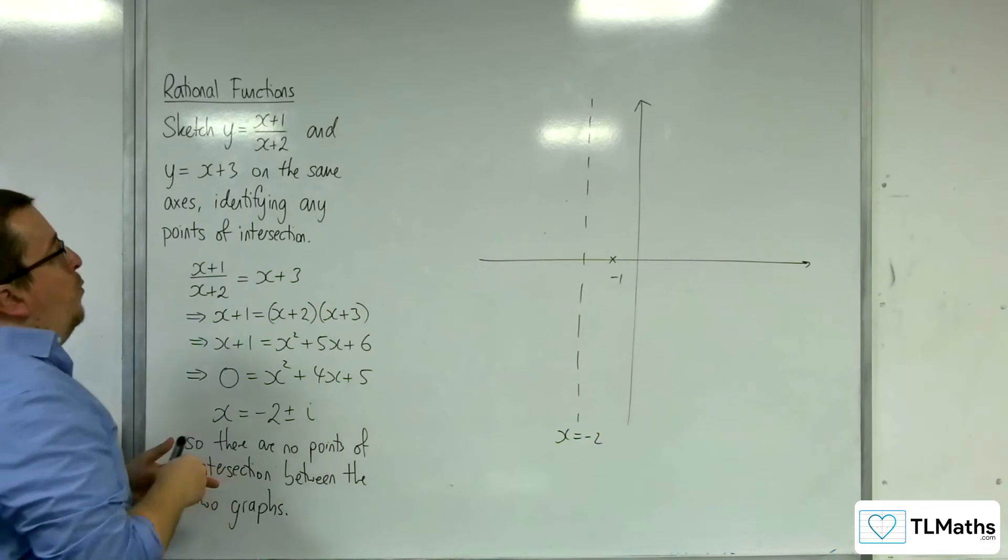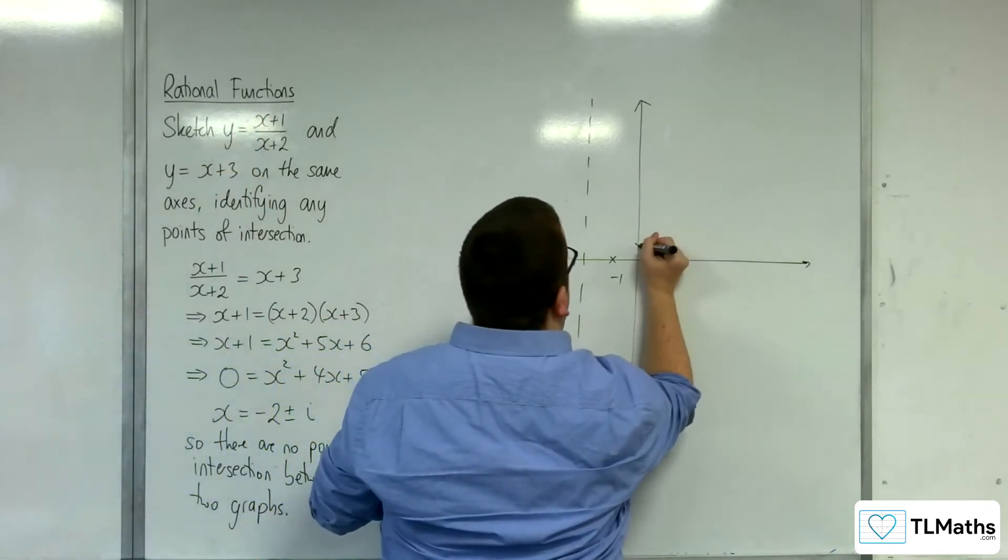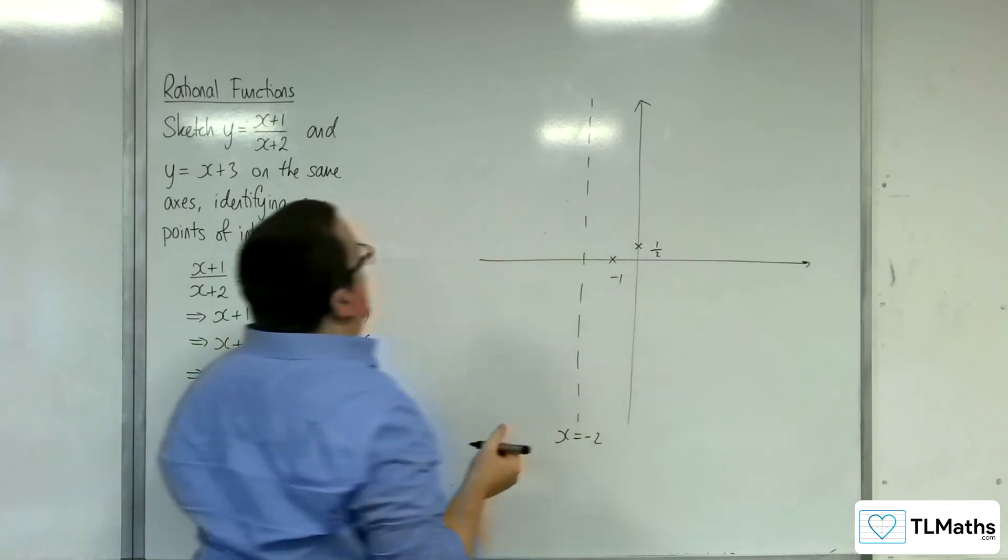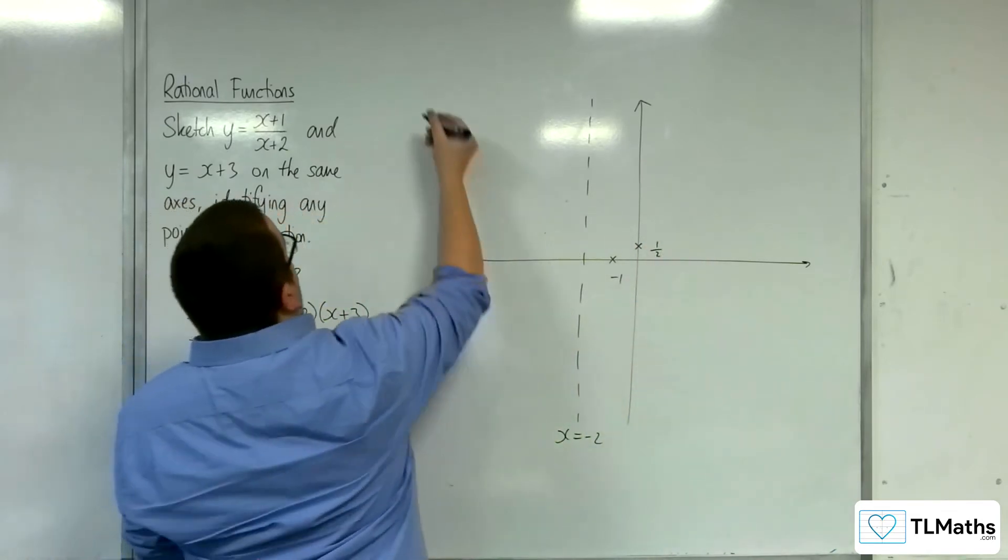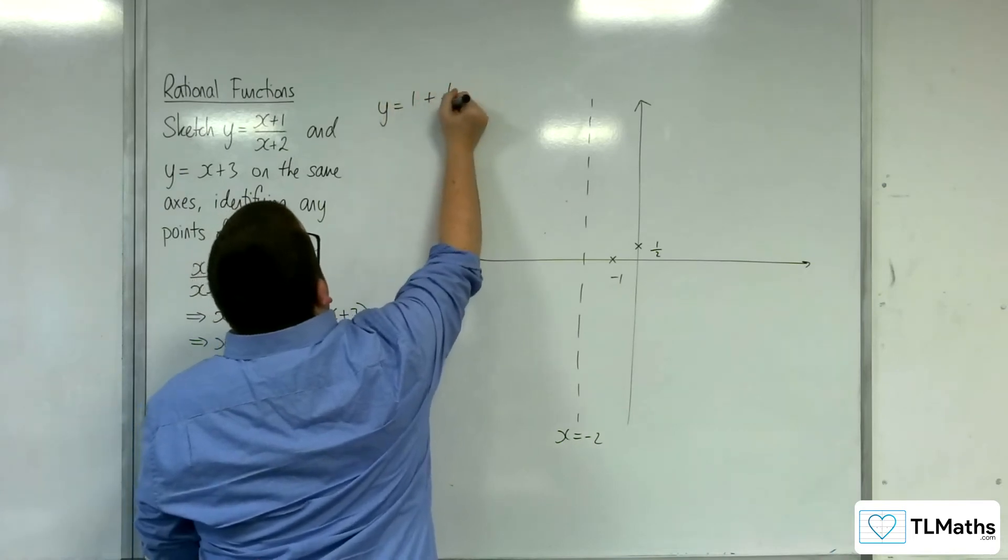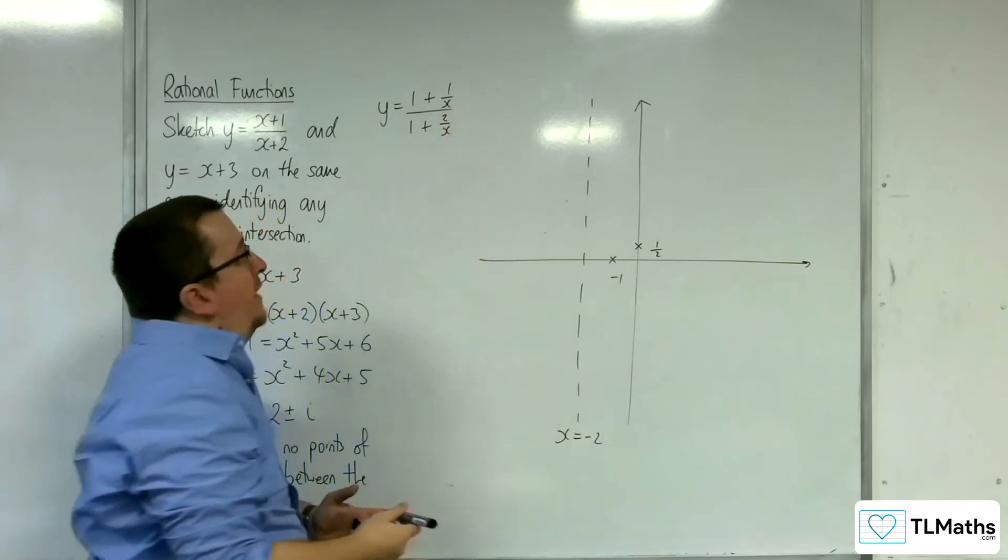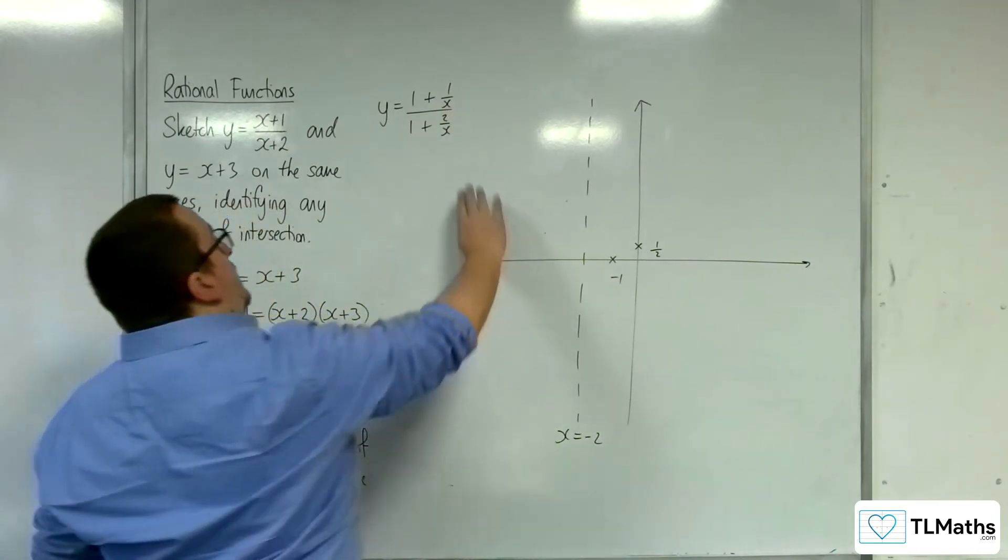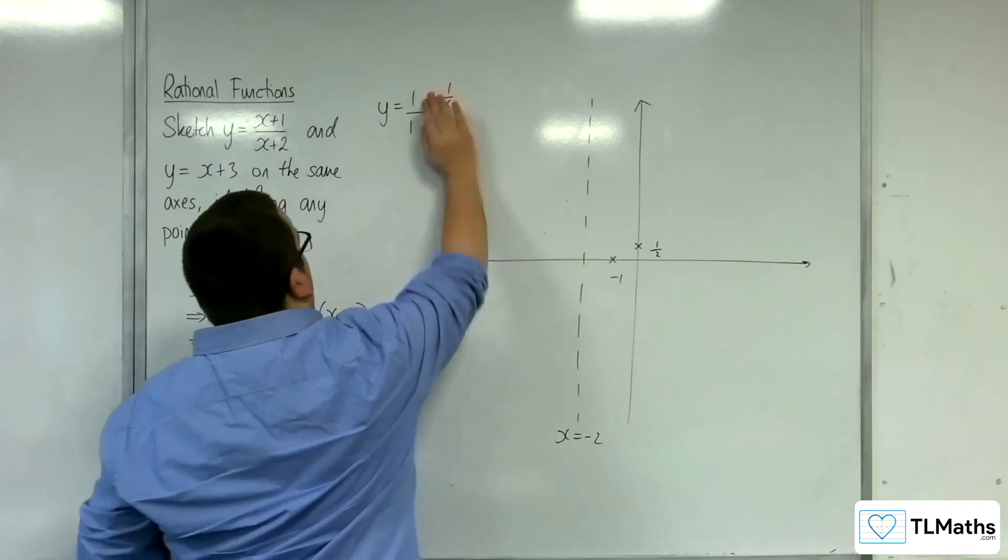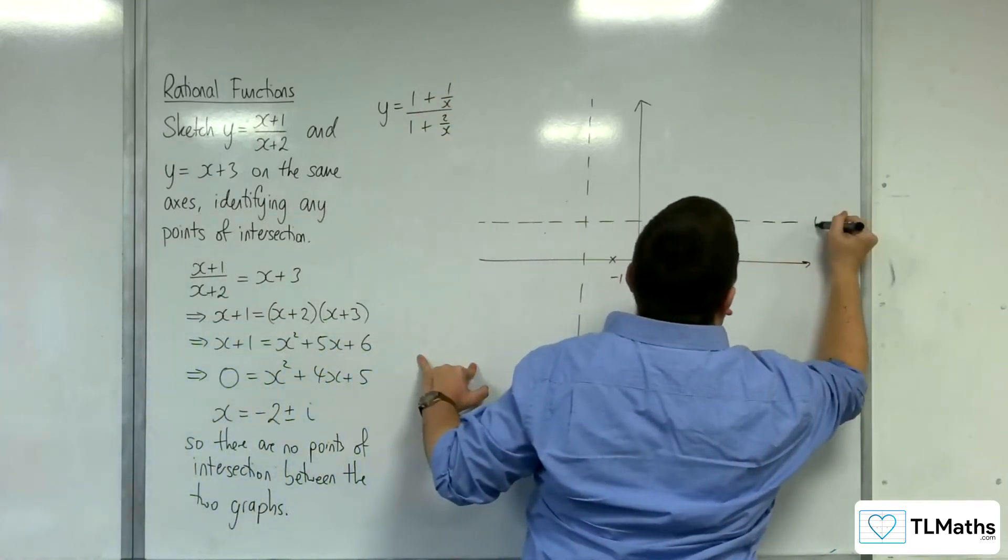And it's going to cross the y-axis when x is 0 at 1 over 2, so 1 half. And we can work out the horizontal asymptote by dividing top and bottom by x. So y is equal to 1 plus 1 over x over 1 plus 2 over x. So as x gets larger and larger in either direction, these two fractions will tend to 0, and we'll have 1 over 1. So y equals 1 is a horizontal asymptote.